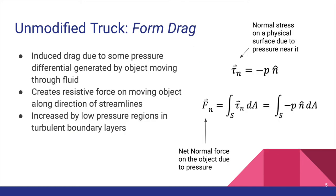Form drag is an induced force that occurs due to a pressure differential generated by an object moving through a fluid. As with most vehicles, a pickup truck exhibits a high pressure region at its front where streamlines stagnate. A pickup truck also has a larger and lower pressure region near its bed, which reduces the normal force from behind. As a result, the net backward force on the truck due to form drag is greater than that of a car without a bed.